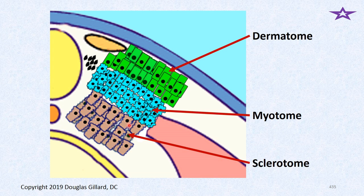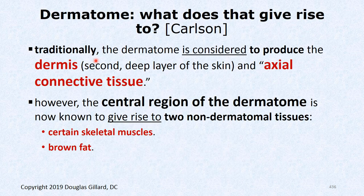We've taken our epithelial somite and split it into three layers: the dermatome on top which is still epithelium, the myotome in the center made of mesenchymal cells — myo means muscle, so these will become muscles — and the sclerotome on the inside that will become ribs and vertebrae. The somitocele cells have migrated next to the neural tube, waiting to help make the disc and articular surfaces of the facet joints.